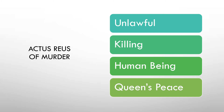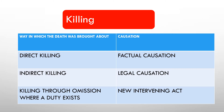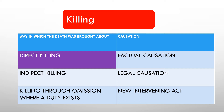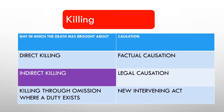'Killing' is arguably the element you need to analyse most — explain and apply it carefully. Consider in which way the death was brought about. For a direct killing, ask: was there something done by the defendant to bring about the death? We looked at the case of Adams, where an injection caused death. It could be a stabbing, shooting, or a blow — was there an act which caused the death?